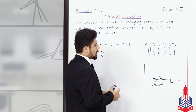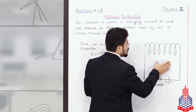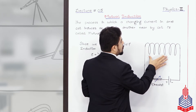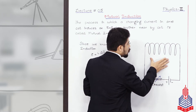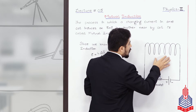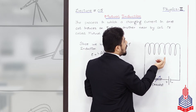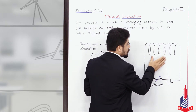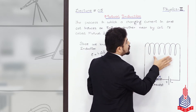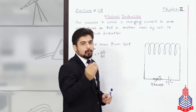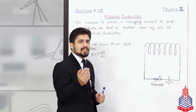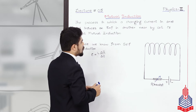Self-induction: we have learned that if we provide a changing current here, there will be a changing flux. From that changing flux, there will be an EMF induced. And that induced EMF will try to cause a current flow, and that changing current will produce a force. That is something that we studied in self-induction. Let me write it here in the form of a cycle.